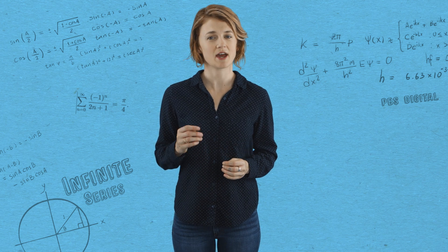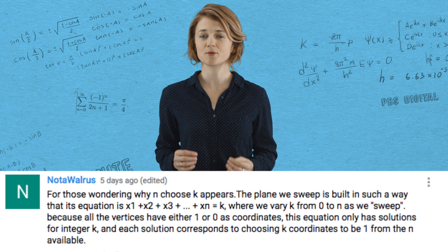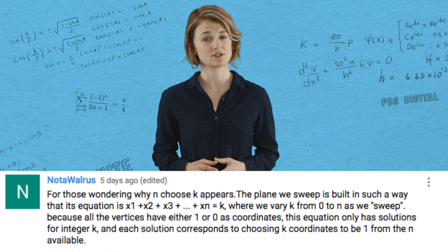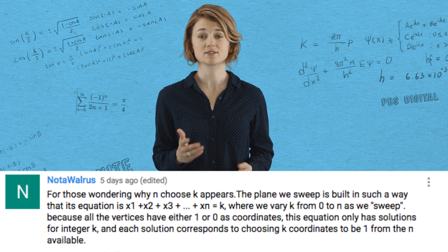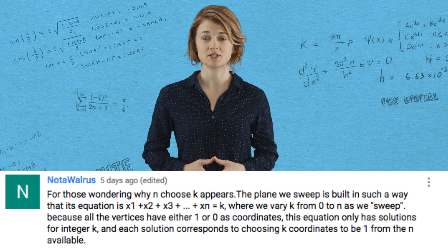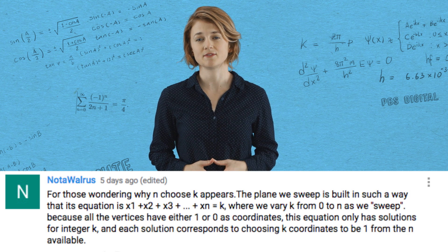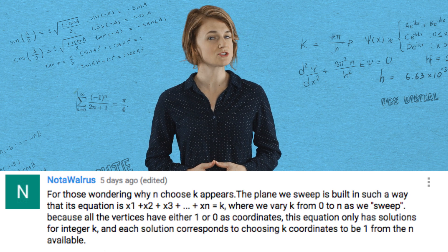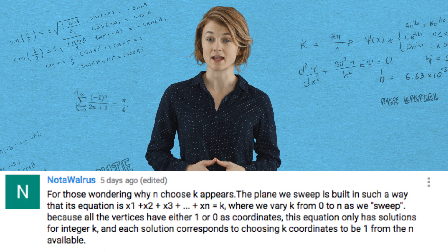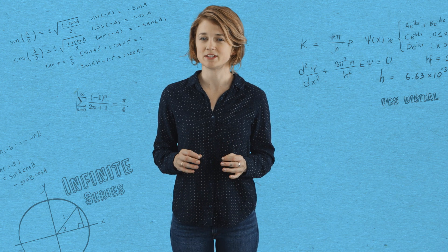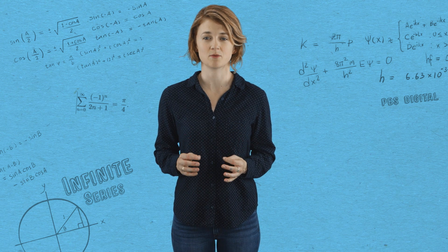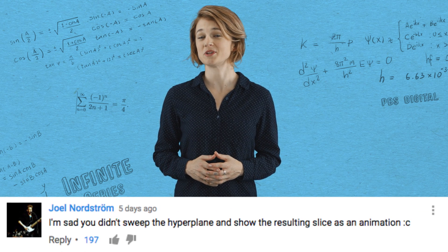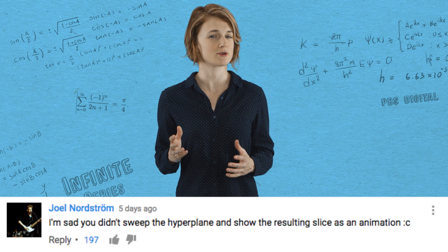In last week's episode on hypercube slices, a commentator who is not a walrus gave a great explanation for why n choose k appears. The plane we sweep is built in such a way that its equation is x1 plus x2 plus x3 and so on up to xn equals k, where we vary k from 0 to n as we sweep. Because all the vertices have either 1 or 0 as coordinates, this equation only has solutions for integers k, and each solution corresponds to choosing k coordinates to be 1 from the n available. We can't include every detail of these big complex problems, and I love reading the way you all use the comments to fill them in.